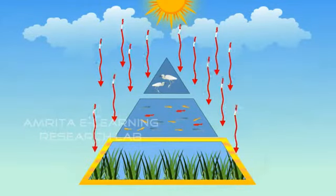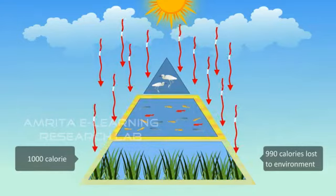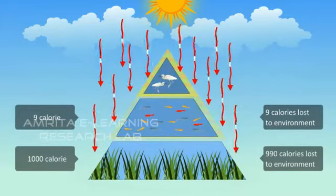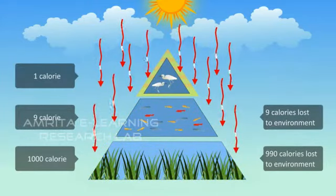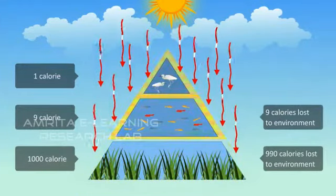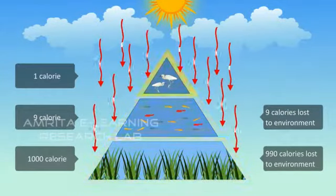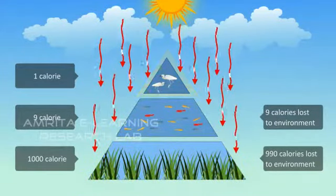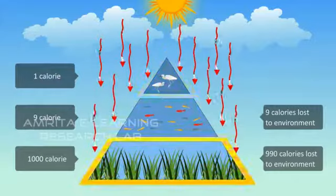Each trophic level in a food chain contains a certain amount of biomass, or the dry weight of all organic matter contained in its organism. Energy from the Sun stored in biomass is transferred from one trophic level to another through the operating food chains and food webs.